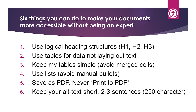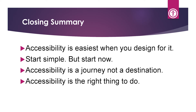Always save as a PDF — never print to PDF. Saving as a PDF using Word's File > Save As or the Acrobat ribbon's PDF generator will give you options for creating a compliant PDF. Printing to PDF strips out all accessibility. Finally, keep your alt text short — two to three sentences, around 250 characters. Alt text cannot be paused; once a screen reader starts reading it, if the user misses something in the middle they have to go back and start again. Accessibility is easiest when you design for it from the start rather than fixing it at the end.